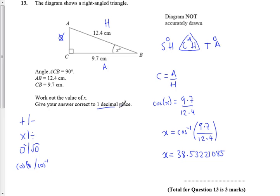We need to round it to one decimal place, so that means we do 38 point, we want to cut off here, so 38.5 degrees. And then we're finished.